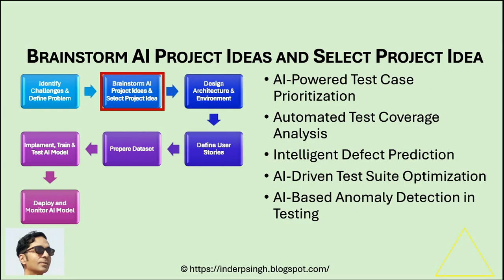Phase 2: Brainstorm AI project ideas and select a project idea. Once you have identified a challenge, brainstorm ideas for Artificial Intelligence projects. You can email me if you want a working example project with dataset and source code. Here are a few examples of AI project ideas for beginners.